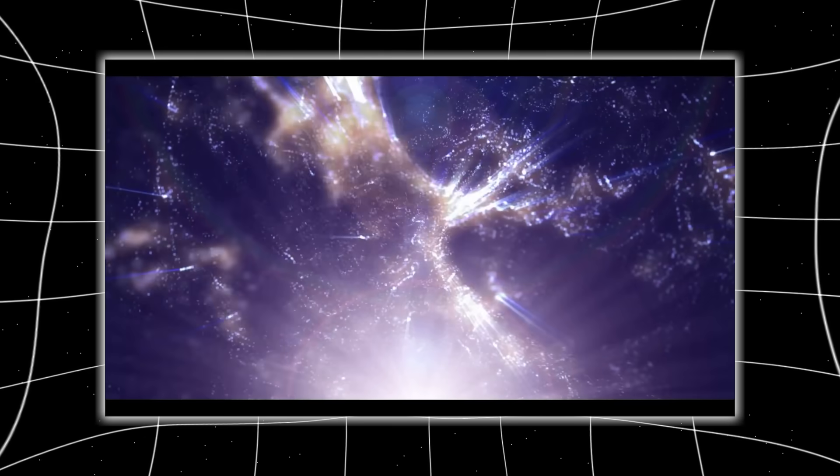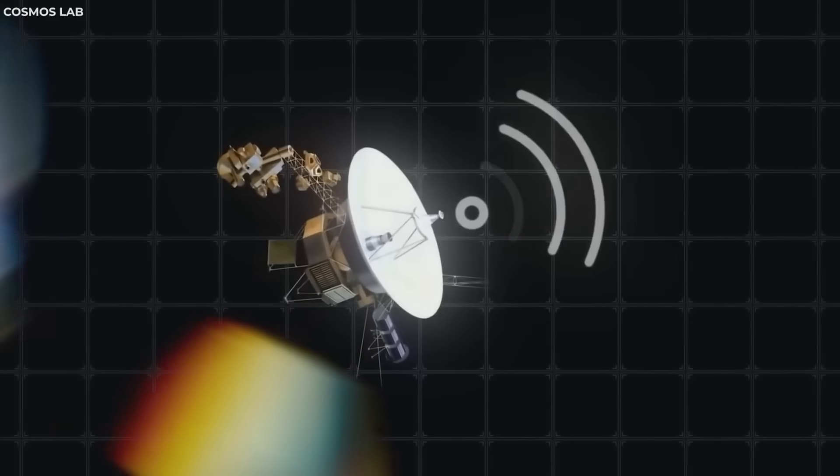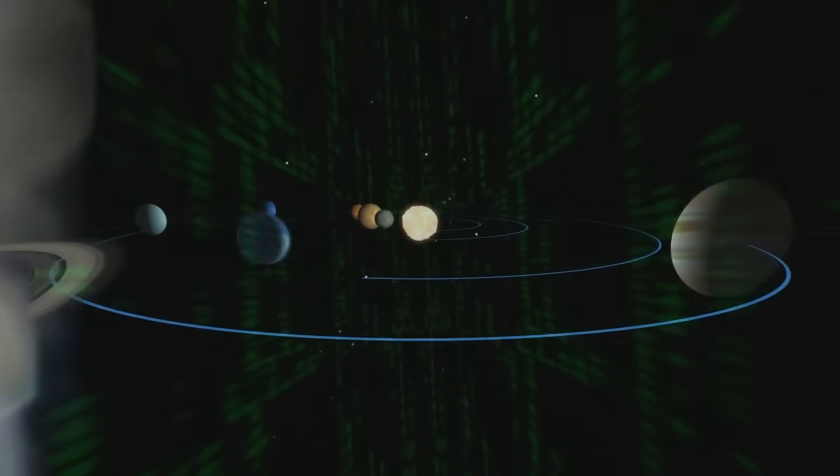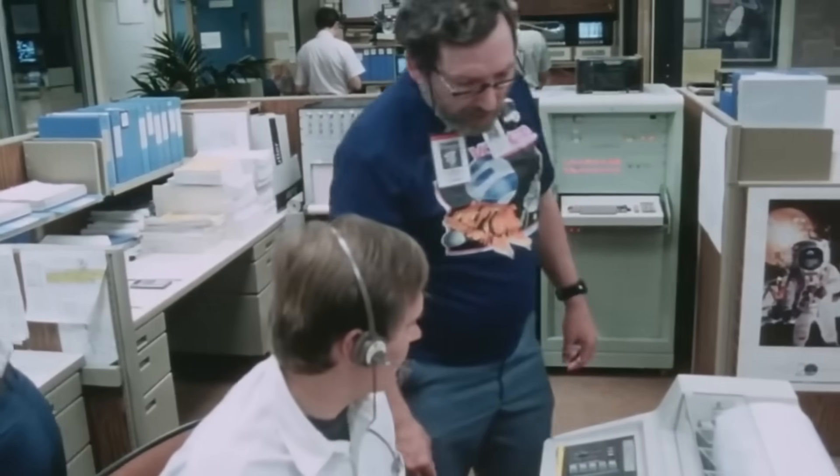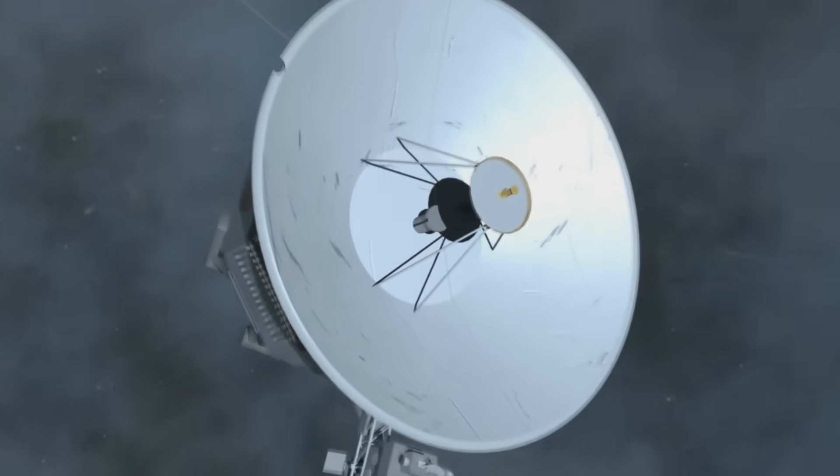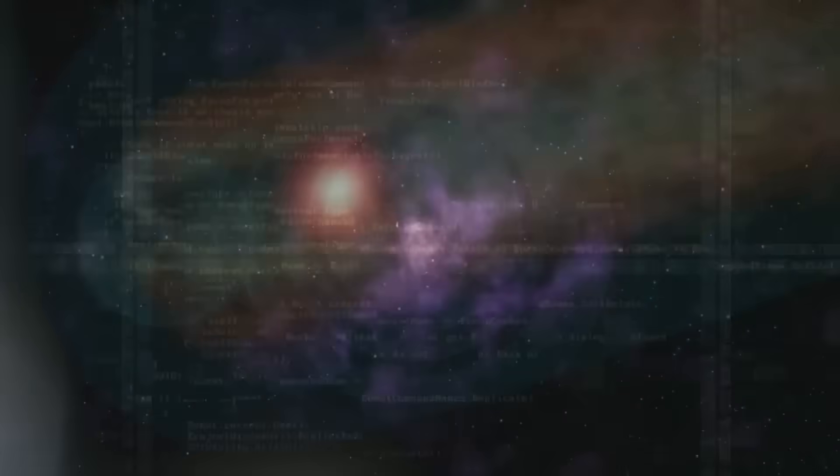Maybe the heliopause wasn't a wall. Maybe it was a window. One way. Directional. A filter that allowed signals out, but dampened anything coming back in. If true, this would mean our solar system isn't just a bubble. It's shielded, perhaps deliberately. And Voyager 2 just punched a hole through it. Something on the other side might have noticed.